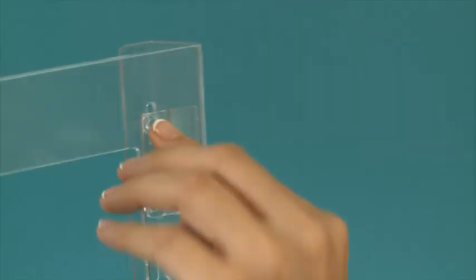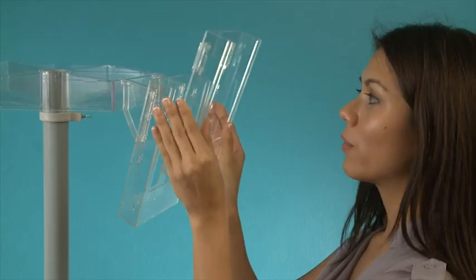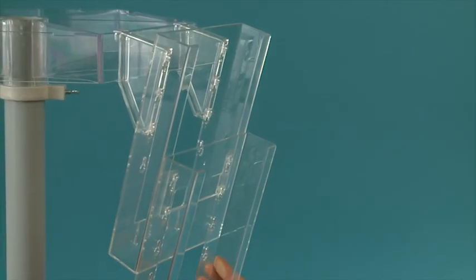Again we use the same side clips to mount the pocket onto the previous pocket as we tier down. Now we can go down another five levels, making a total of seven tiers.